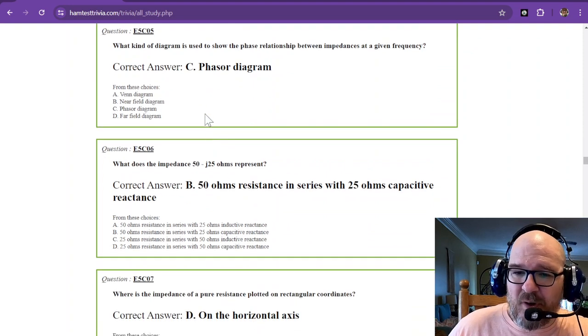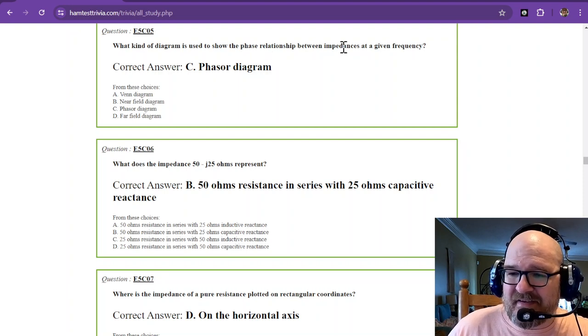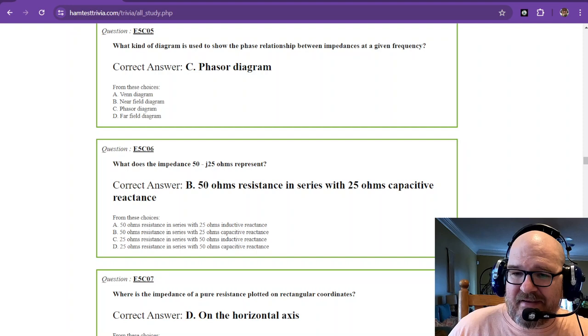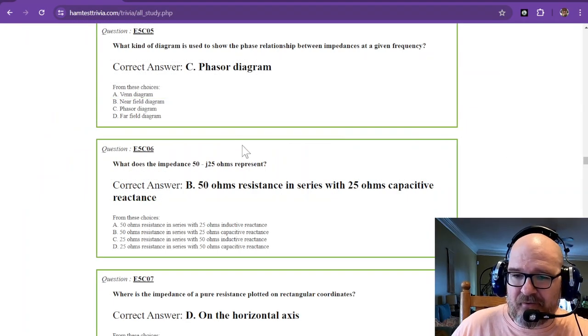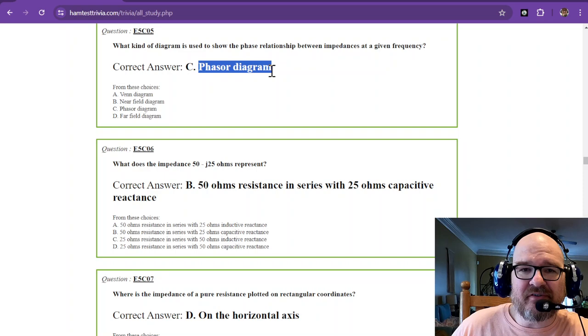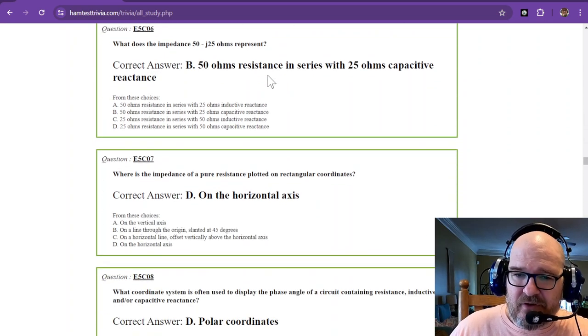So just remember that when it comes to frequency response, a logarithmic scale is going to make it look a whole lot better. Question number five. What kind of diagram is used to show the phase relationship between impedances at a given frequency? That is a phasor diagram. And here is number six. It's a phasor diagram. And if you were to start at the origin, you could draw your line to that point at negative 25 ohms capacitive reactance and 50 ohms resistance. And that would give you an angle right there. Now that is not drawn to scale. So we are using phasor diagrams. That's where these polar coordinates are going.